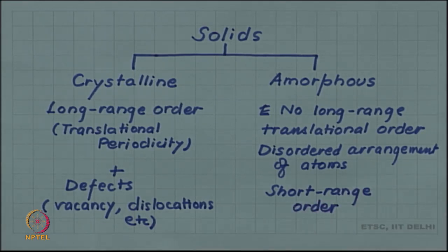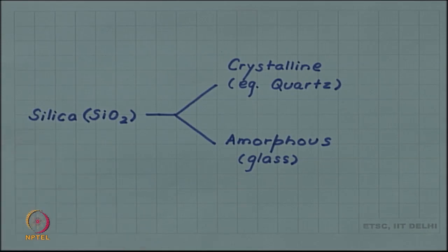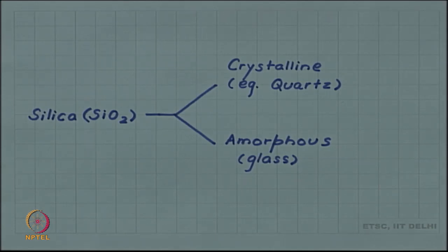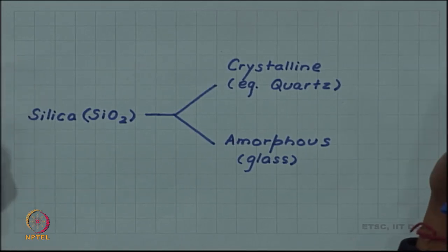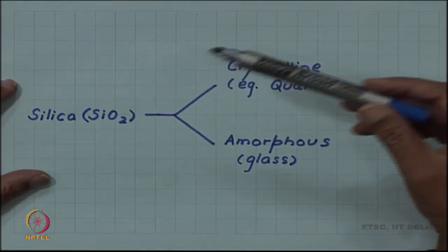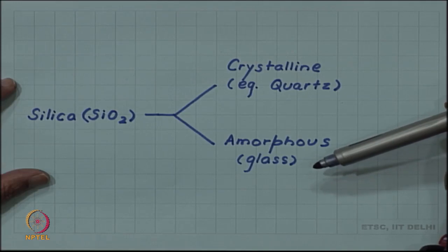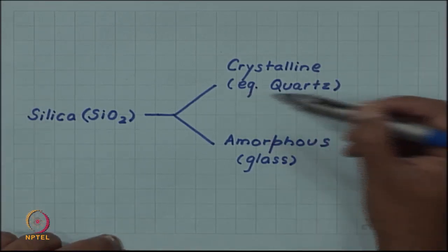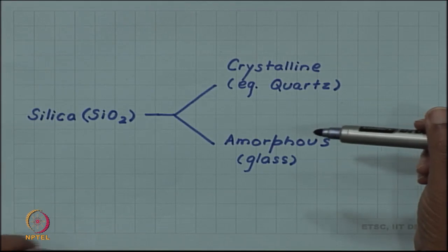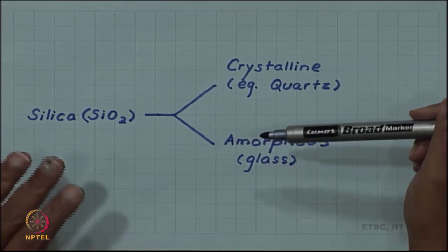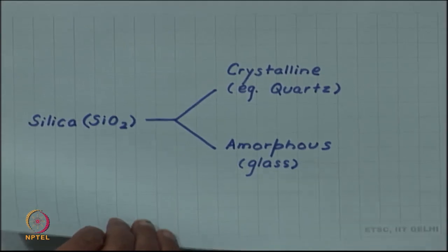What we mean by short range order will become clear when we consider the example of silica, which is one of the most common glasses. Silica SiO2 is one of the most abundant minerals in the earth's crust. It can come either in a crystalline form or in amorphous form. When silica is crystalline, it has various crystalline phases — for example, one of them is quartz. But if the silicon and oxygen atoms are disorganized and not ordered, then we have an amorphous phase or glass.